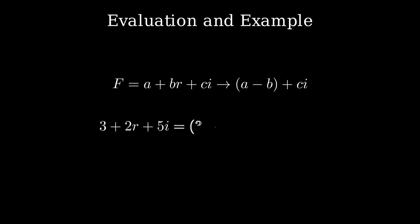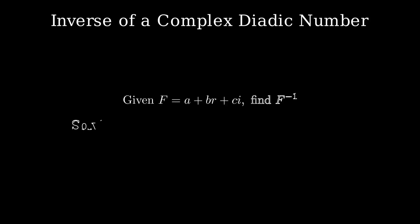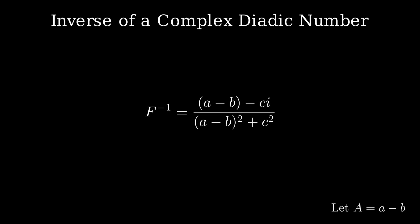For example, 3 plus 2r plus 5i evaluates to 1 plus 5i. Now what about the inverse of a complex dyadic number? Given f equals a plus br plus ci, the inverse of f turns out to be a minus b minus ci, divided by the sum of a minus b squared plus c squared. Letting alpha equal a minus b, this simplifies to alpha minus ci over alpha squared plus c squared. Just like with complex numbers, this formula resembles the complex conjugate trick, now adapted to dyadic structure. And with that, the dyadic world now reaches fully into the complex plane.